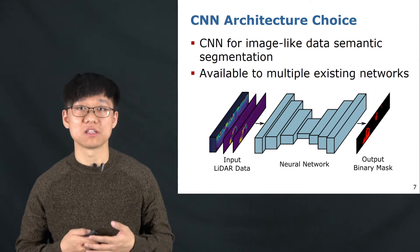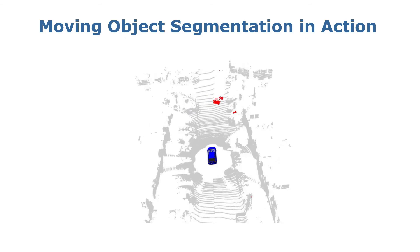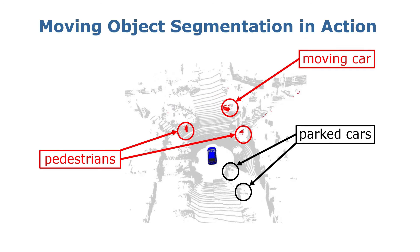Here you can see the online moving object segmentation results of our methods on the KITTI odometry test data. The red points refer to moving objects, while the gray points are the non-moving things. As can be seen, our methods distinguish moving objects, like moving cars and pedestrians, from static objects, like parked cars and static background like roads and buildings.